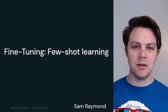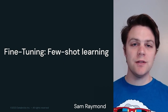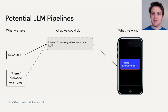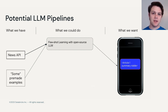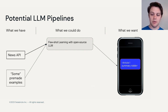Let's take a look at the first way that we could tackle this problem with few-shot learning. Just to recall, we have the News API that allows us to gather articles from our news outlet, and we have some pre-made examples of other articles that have been turned into riddles. So we could potentially have a look at how feasible the few-shot learning approach might be.